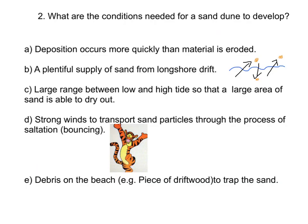Aim number two: what are the conditions needed for a sand dune to develop? This is the recipe for sand dune formation. Firstly, deposition must occur more quickly than material is eroded so that material can build up. Second, there must be a plentiful supply of sand transported to the beach from longshore drift. Third, there must be a large tidal range so that when the tide goes out, a large area of land is exposed, able to dry out, and the wind can pick up the sediment.